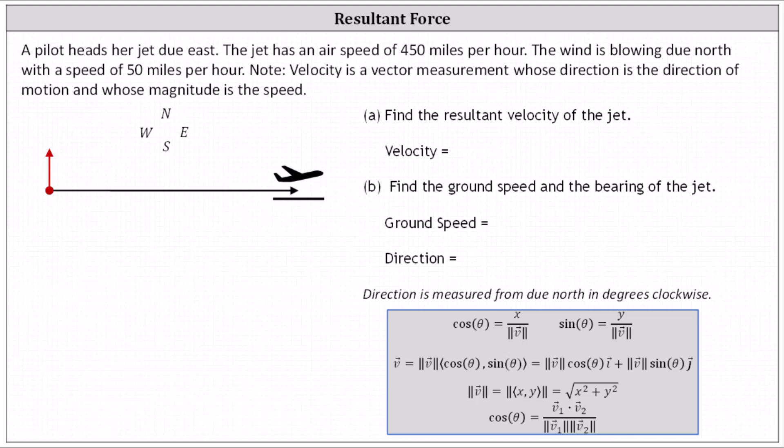We can represent the velocity of the jet without the wind using this black vector. Notice it's pointing due east. Because the speed is 450 miles per hour, we know that magnitude is 450. Let's call this vector v sub one. In component form, vector v sub one has an x component of 450 and a y component of zero.